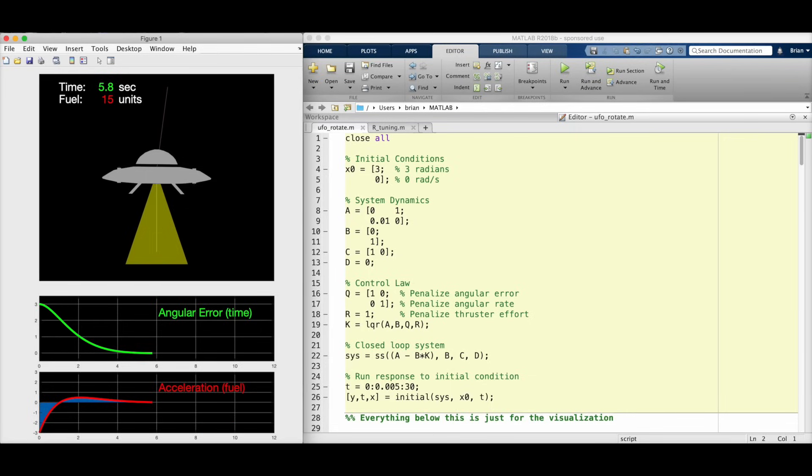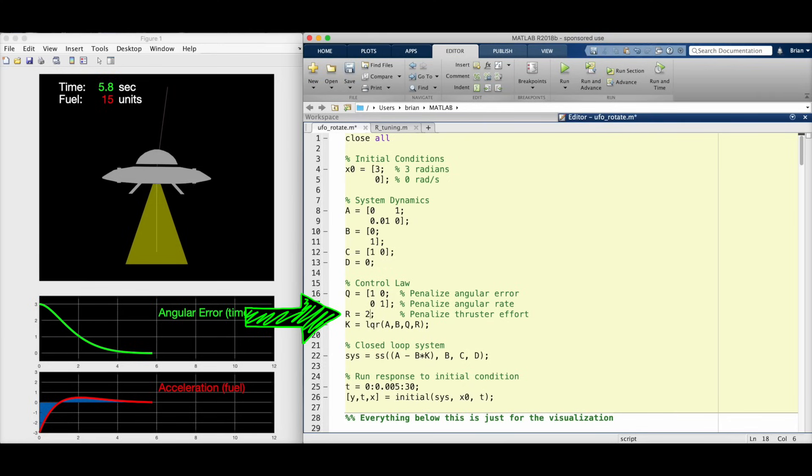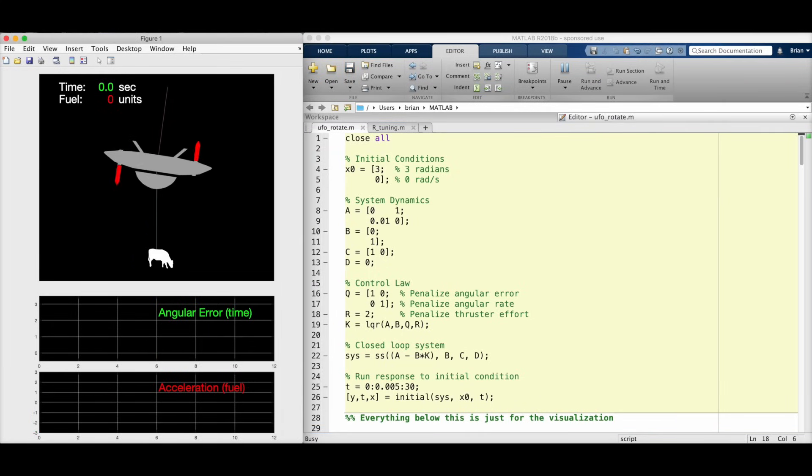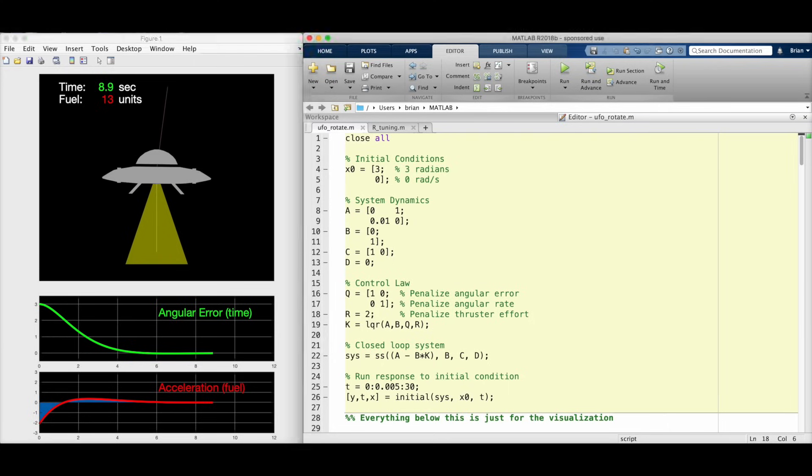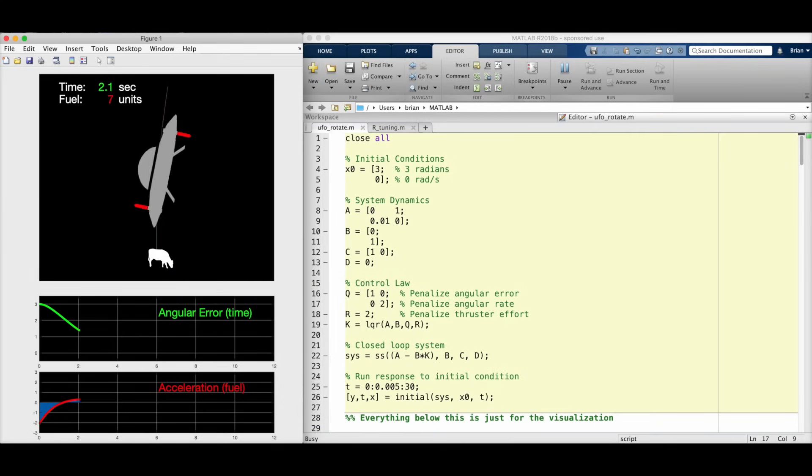Now, let's see if we can use less fuel for this maneuver by penalizing the thruster more. I'll bump r up to 2 and rerun the simulation. Well, we used 2 fewer units of fuel, but at the expense of over 3 additional seconds. The problem is that with this combination, it overshot the target just a bit and had to waste time coming back. So let's try to slow down the max rotation speed with the hope that it won't overshoot. And we're going to do that by penalizing the angular rate portion of the Q matrix. Now, any non-zero rate costs double what it did before. And let's give this a shot. Well, we saved about a second since it didn't overshoot, and in the process managed to knock another unit of fuel off.